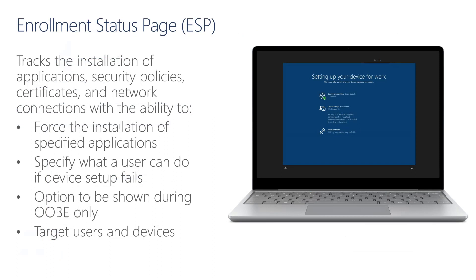The Enrollment Status page, or ESP, can be used during the Windows Autopilot workflow to track the installation of applications, security policies, certificates, and network connections. For devices that went through the Windows Autopilot pre-deployment process, the ESP enables a consistent end-user experience by ensuring that all of the required apps and policies are immediately available after users sign into their devices for the very first time. It offers the ability to block users from getting to their desktops until critical apps are installed, which can be quite helpful for Autopilot scenarios where applications are not pre-cached.